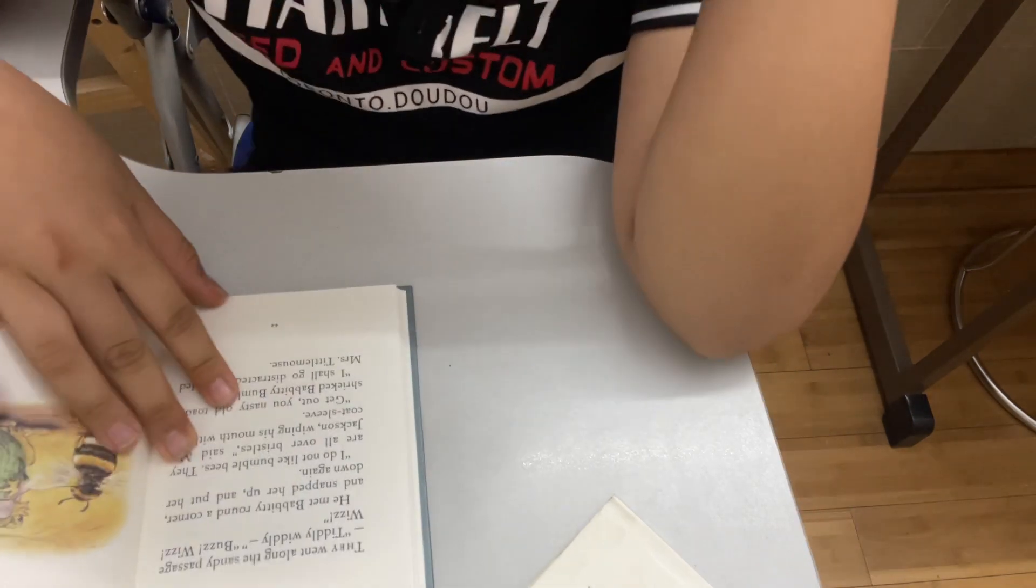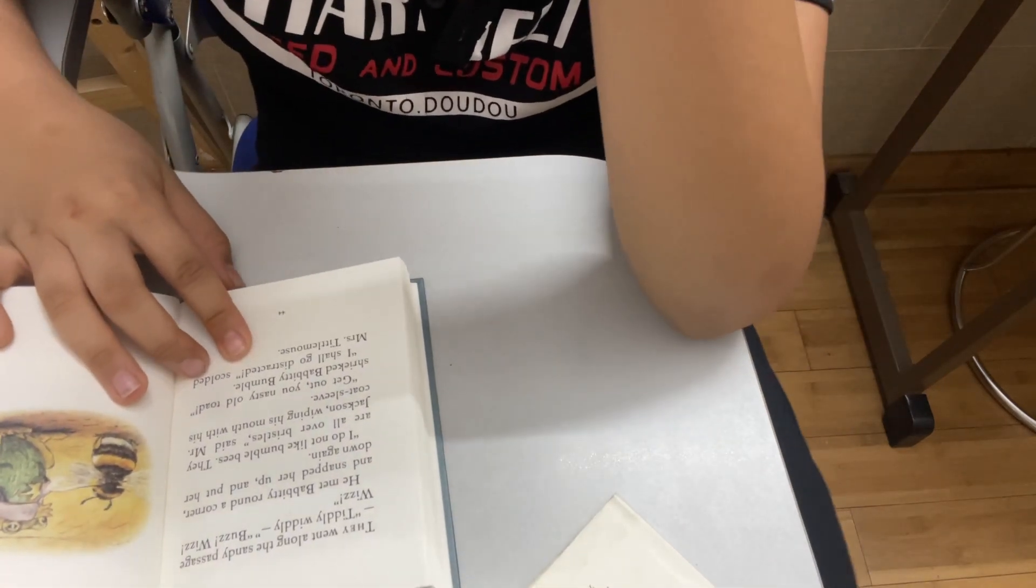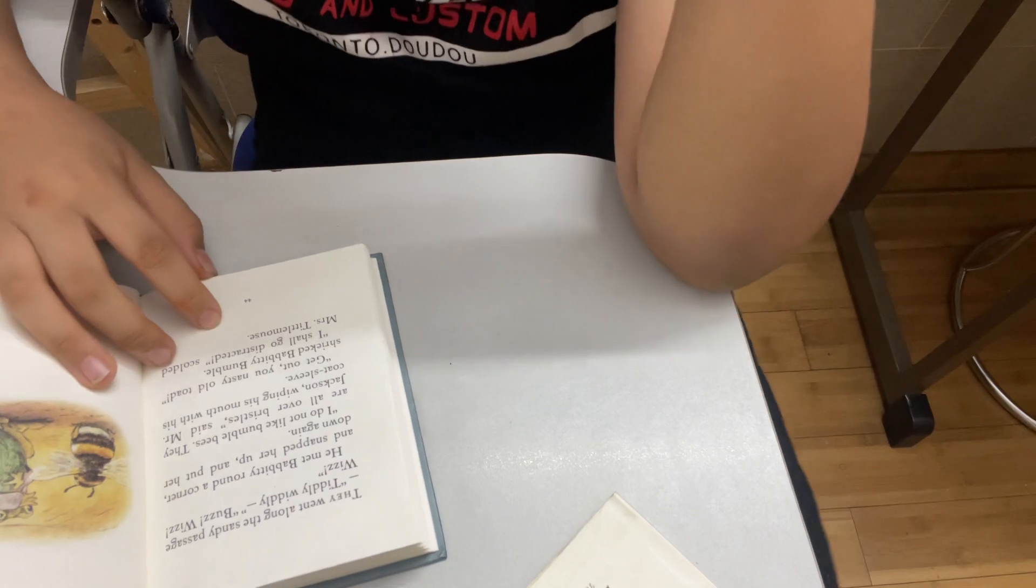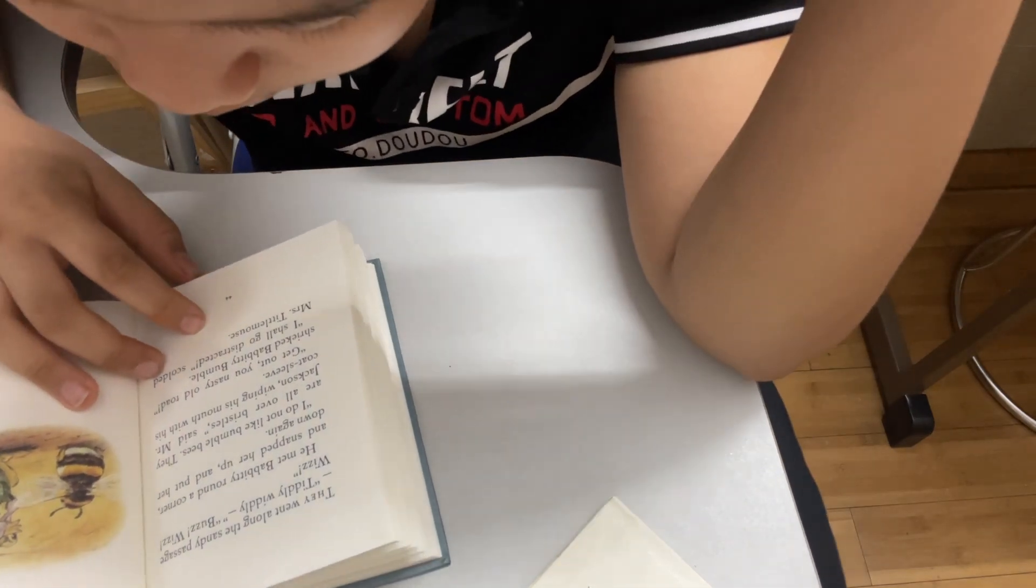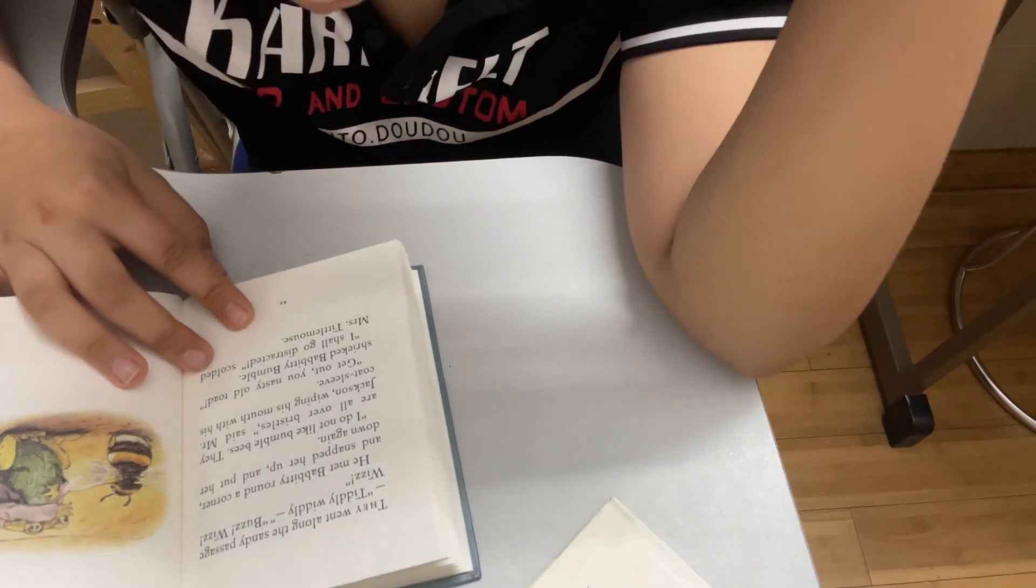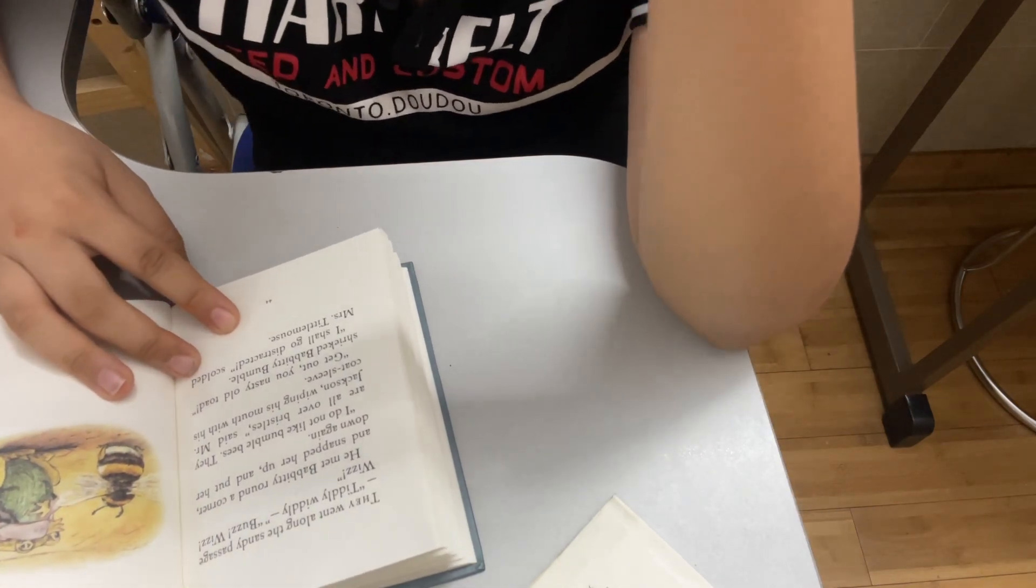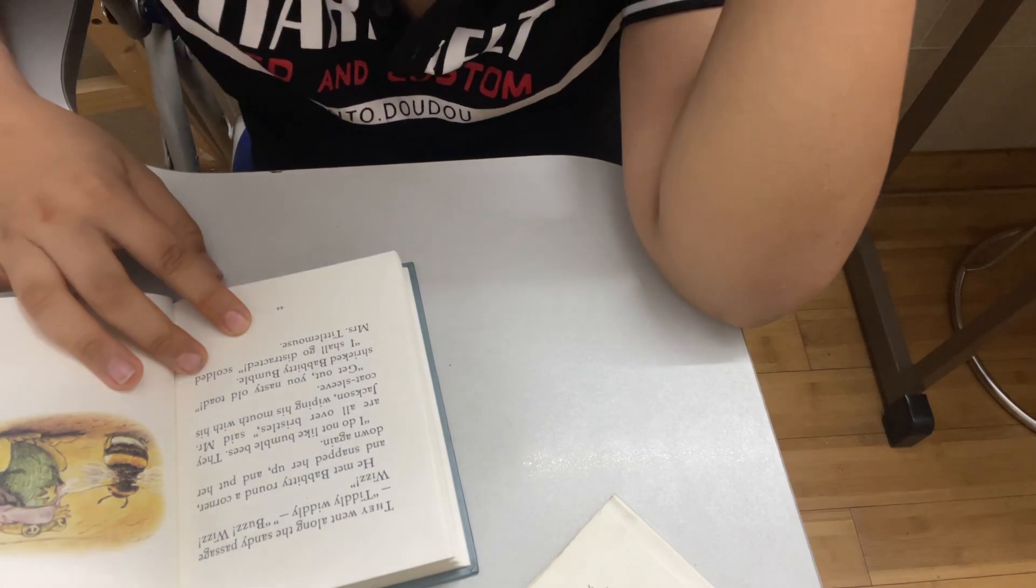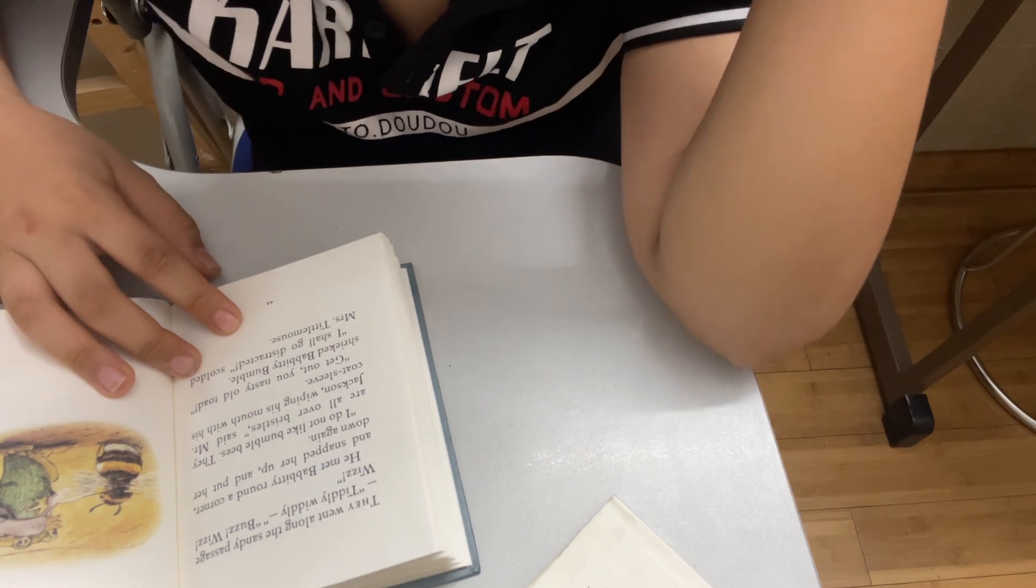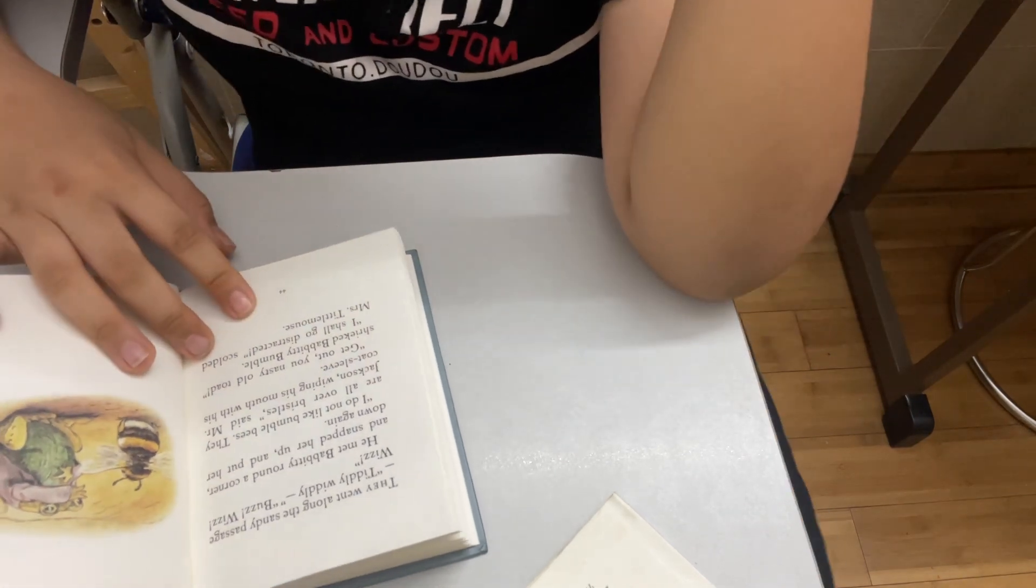They went along the sandy passages. Tiddly, widdly, buzz, whizz, whizz. He met Babbity round the corner and snapped her up and put her down again. I do not like bumblebees, said Mr. Jackson, wiping his mouth with his coat sleeve. Get out, get out, you nasty old toad, shrieked Babbity Bumble.